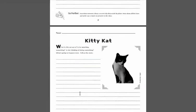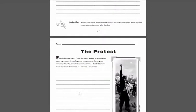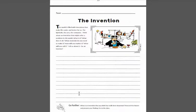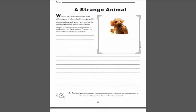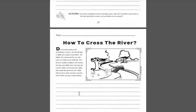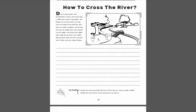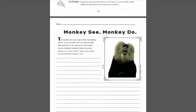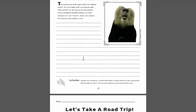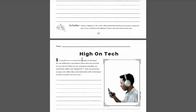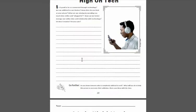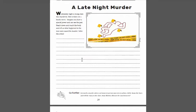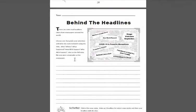Here we go — trip of a lifetime, kitty cat, haunted house — really powerful images and topics. The topics range from fiction and non-fiction. There's one where students have to write out and explain how a boy gets objects across the river — it's kind of a riddle. Topics include pondering human nature and our differences with animals, planning a road trip, thoughts about whether we're too addicted to tech, solving a murder, and writing an article based on one of the headlines.